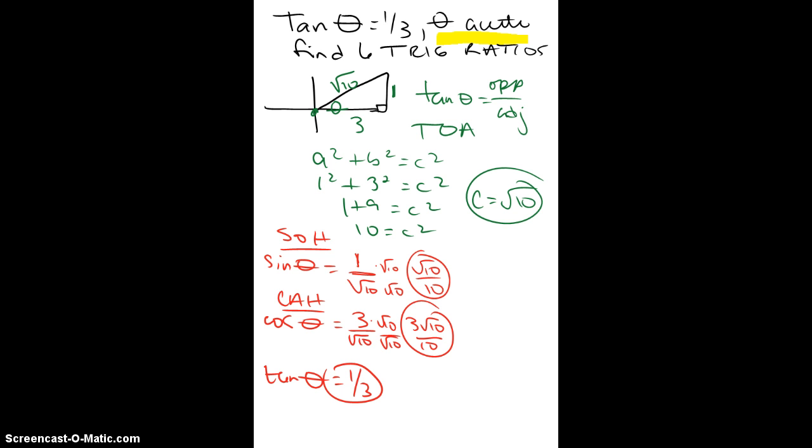Now we're going to switch and do the reciprocal functions. Sine goes with the C one, which is cosecant. Cosine goes with the S one, which is secant. And tangent goes with cotangent. These are just the reciprocal ratios. I'm going to go back to my original.